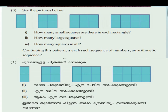How many small squares are there in each rectangle? How many large squares are there? How many squares in all? Continuing this pattern, is each sequence of numbers an arithmetic sequence?